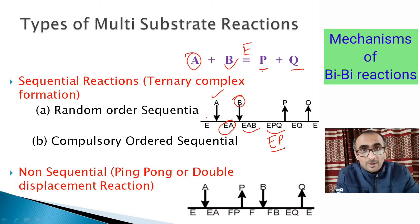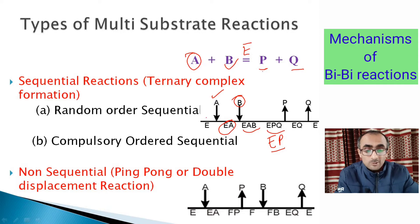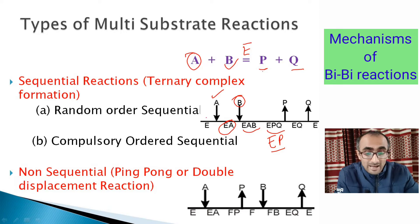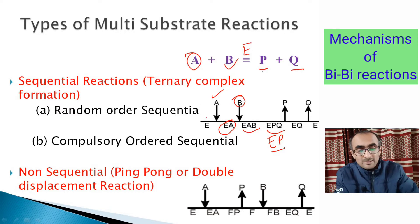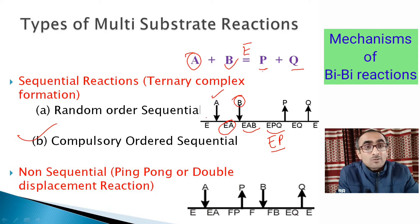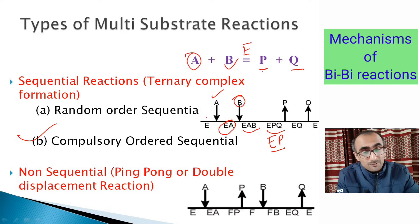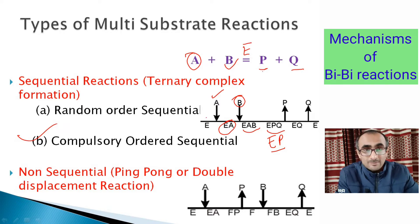There are two possibilities for sequential reactions. In a random order sequential reaction, either substrate A or B can bind first, and either product P or Q can be released first from the enzyme. In compulsory ordered sequential reaction, the binding of substrate and releasing of product is fixed — only A binds to the enzyme first, then B binds, then P is released, then Q is released. That fixed order defines the compulsory ordered sequential reaction.